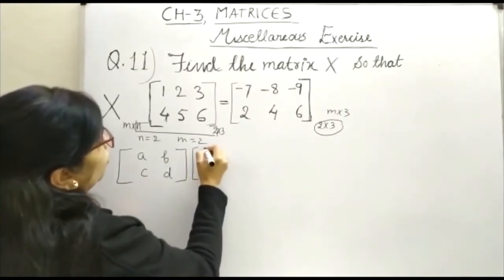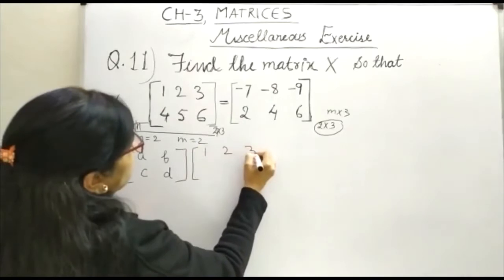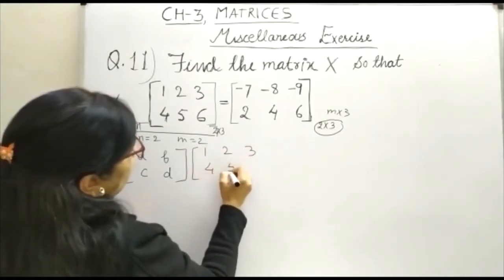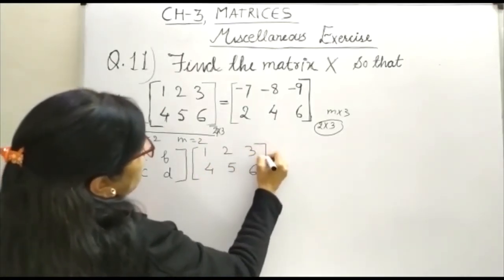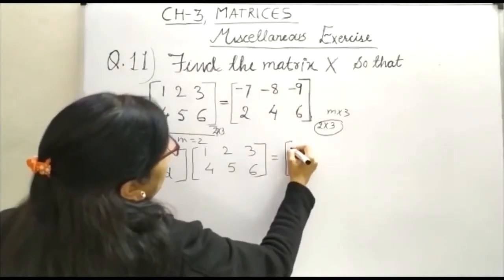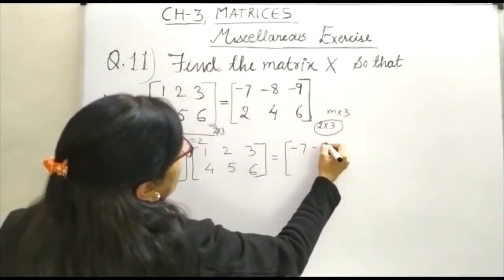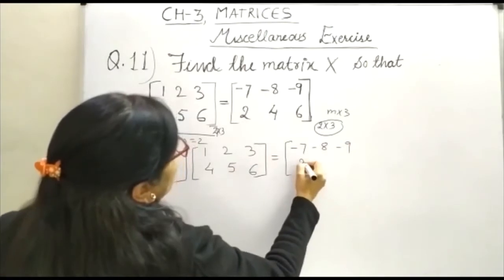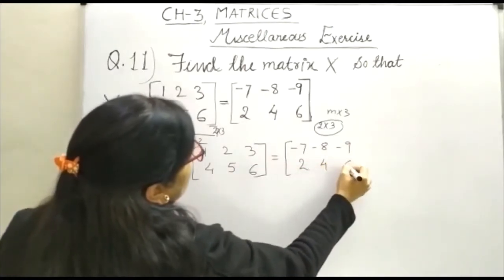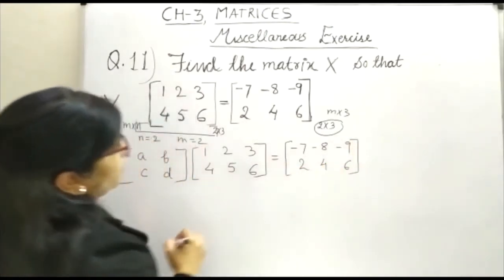Here it is 1, 2, 3, 4, 5, 6 and it is given minus 7, minus 8, minus 9, 2, 4, 6.